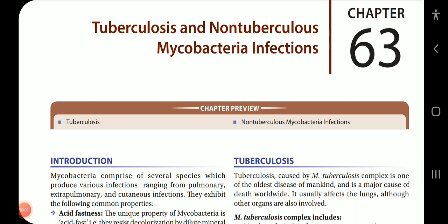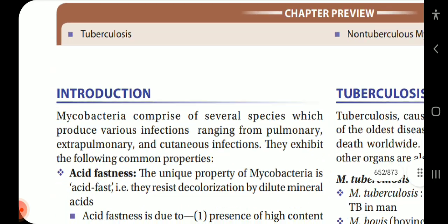Now let us start with chapter 63 of Apoorvaiya Shastri Essentials of Microbiology, which is about tuberculosis and non-tuberculous mycobacteria infection. We will be covering it in three parts: first, the general pathogenesis and clinical features of tuberculosis; second, the lab diagnosis; and third, the treatment of tuberculosis along with non-tuberculous mycobacteria infection.